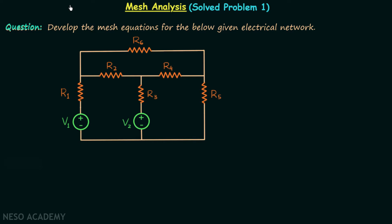In the previous lecture I explained what mesh analysis is and how to perform it. We saw the four steps required to perform mesh analysis. Now we are going to solve one problem using mesh analysis, and according to the problem we are required to develop the mesh equations, that is the KVL equations, for the given electrical network.